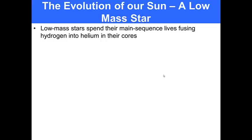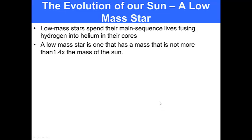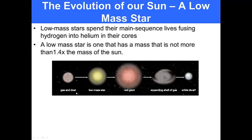What is the evolution of our sun? Our sun is a low mass star. Low mass stars spend their main sequence lives fusing hydrogen into helium in their cores. A low mass star is one that has a mass not more than 1.4 times the mass of the sun. A sun starts out as gas or dust and it eventually forms this low mass star. Our sun will expand and become a red giant.